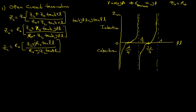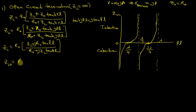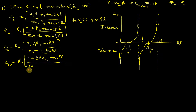Now if there is open circuit termination — meaning the load at the end of the transmission line is open — then ZL = infinity. To evaluate this, divide the numerator and denominator by ZL. Therefore ZIO (where O stands for open circuit) equals R₀ · (1 + jR₀/ZL · tan(βL)) / (R₀/ZL + j·tan(βL)).